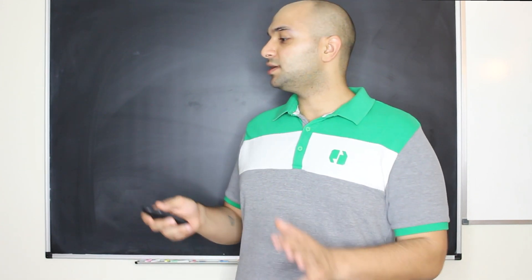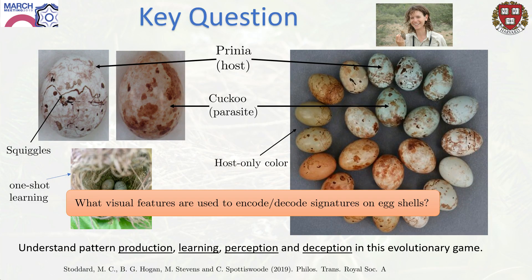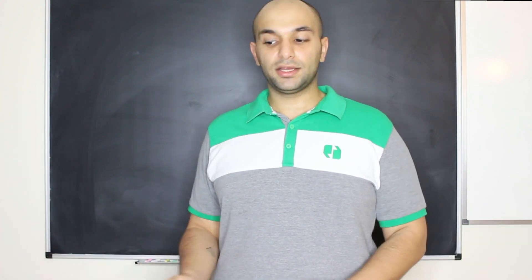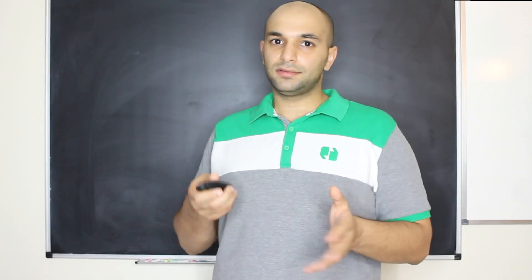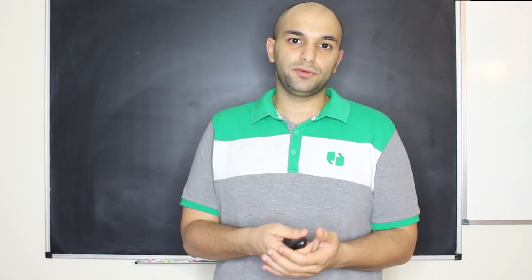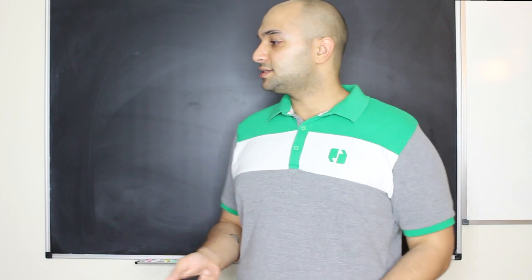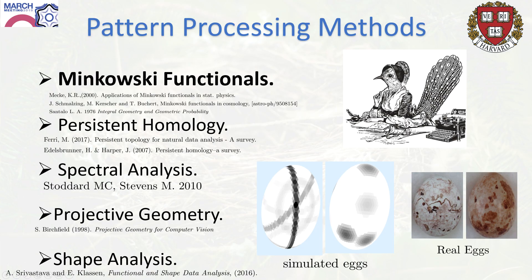What we ask here is what kind of visual features the hosts and parasites are using to imprint and manipulate signatures on the eggs. Since we don't have a lot of data — on the order of hundreds, or at most a thousand eggs, maybe 200 per species — we can't just automatically learn a pattern with a neural network. Instead we use several well-motivated methods to characterize the pattern and apply them to both simulated eggs with squiggles and spots, and to real eggs.